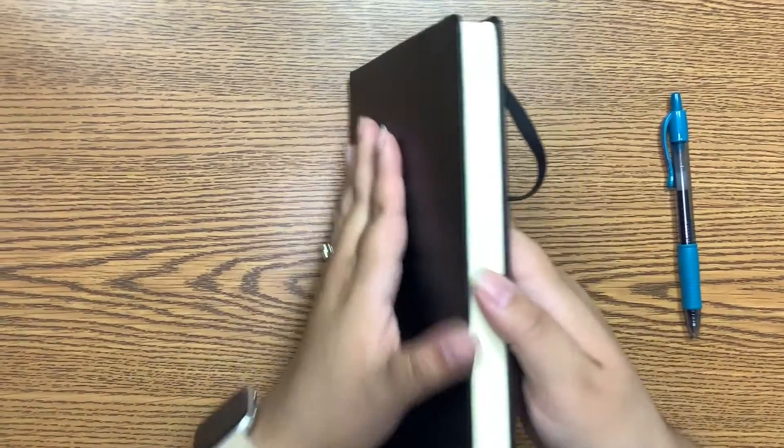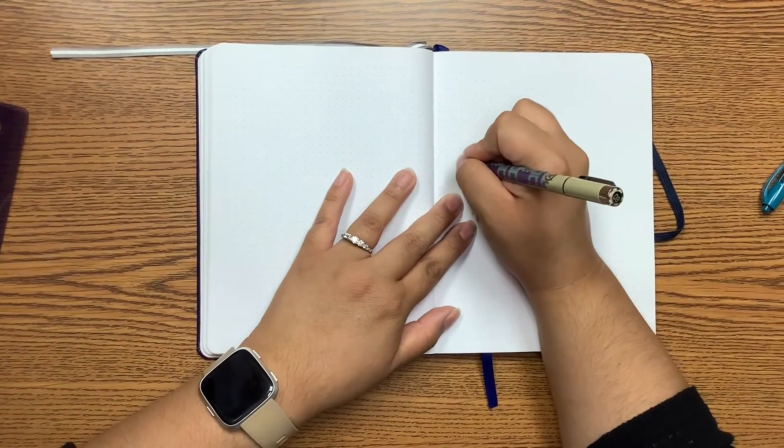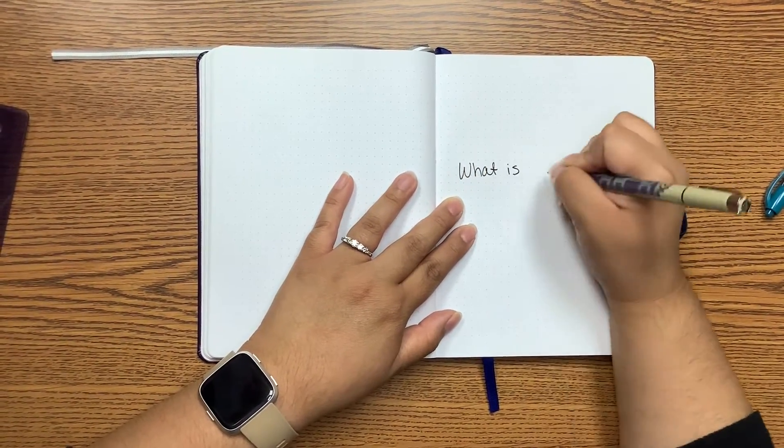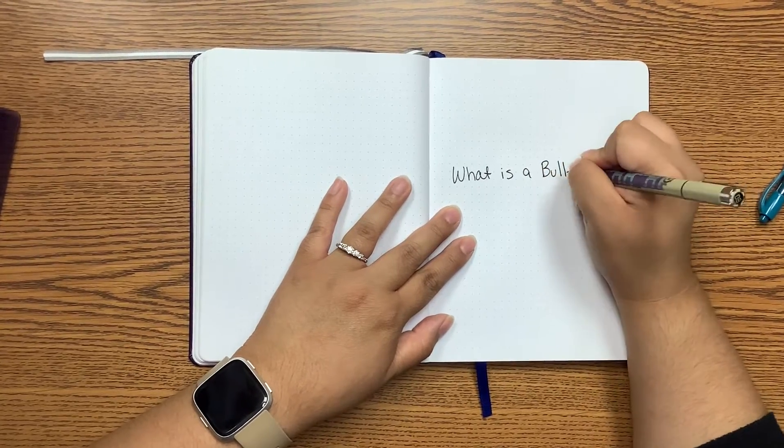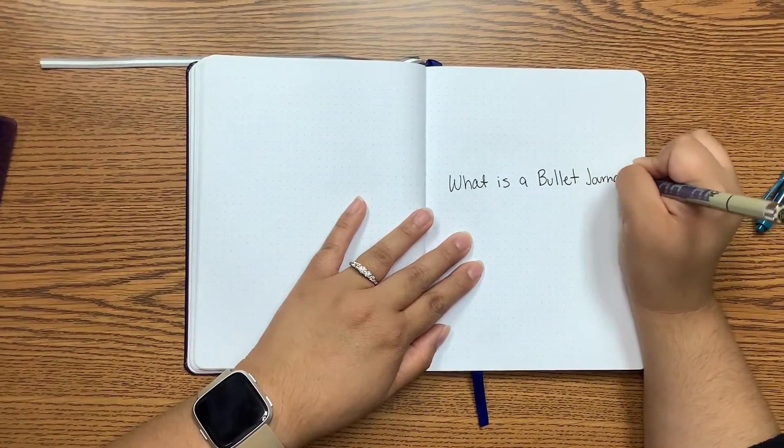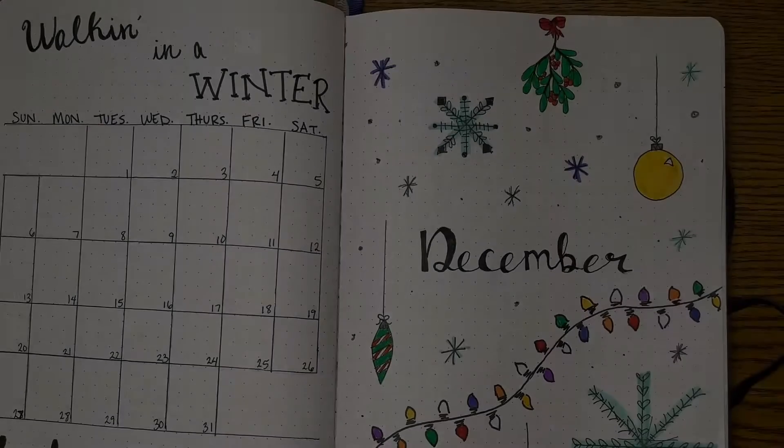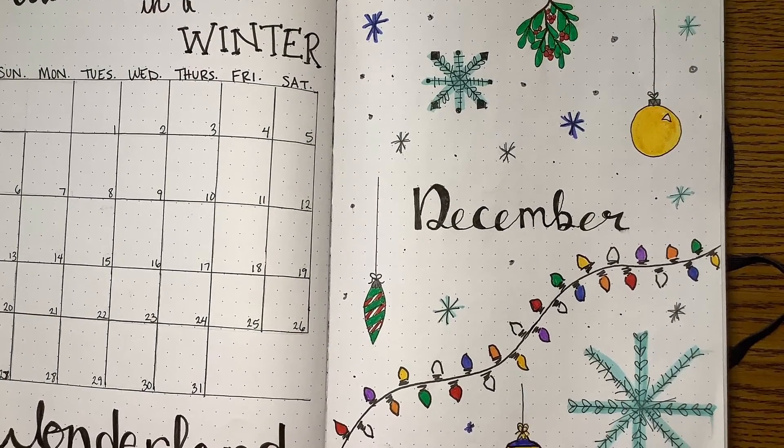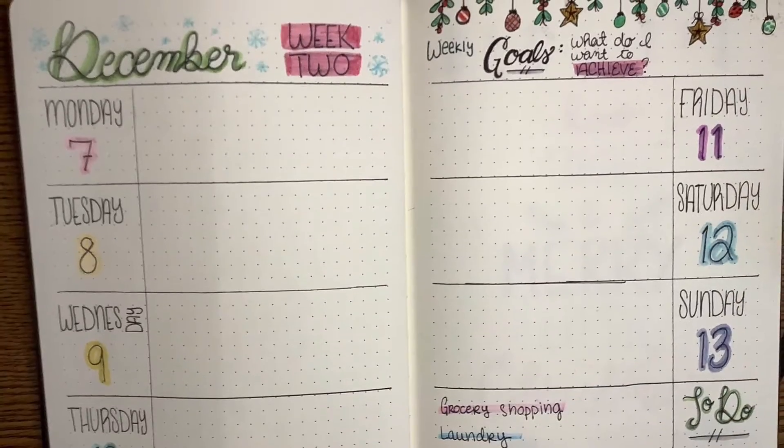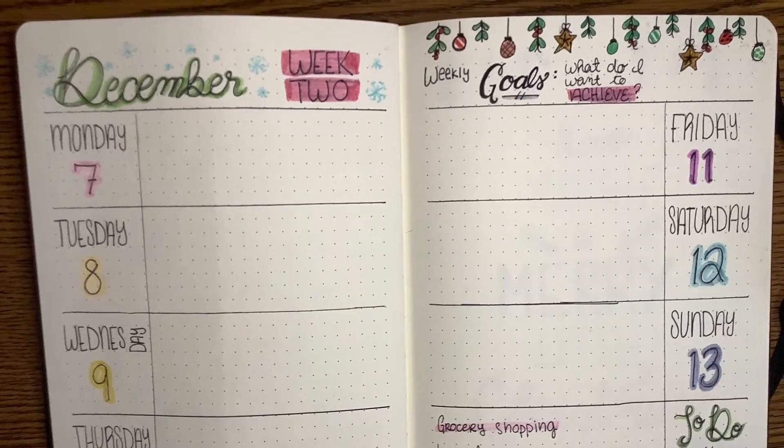So let's begin. First off, what is a bullet journal? A bullet journal, as described by the credited creator of the bullet journaling rapid logging system, Ryder Carroll, is at its core an analog system to track the past, organize the present, and plan for the future. It has since developed into not just an organizational outlet, but also a creative space designed to suit your individual needs.